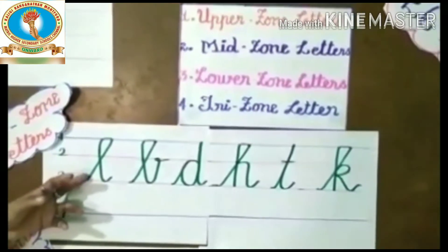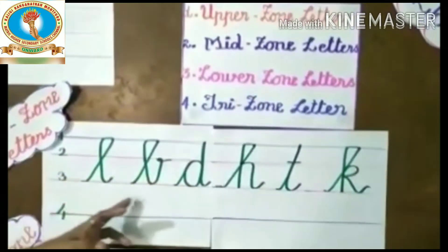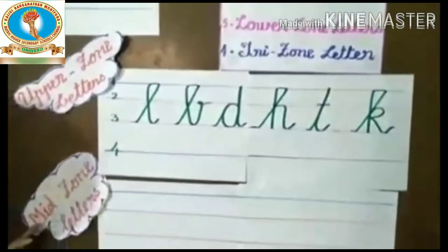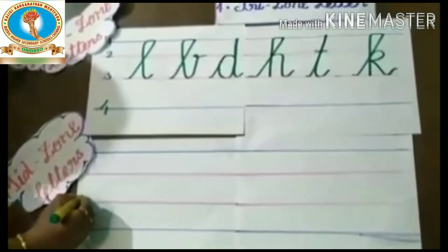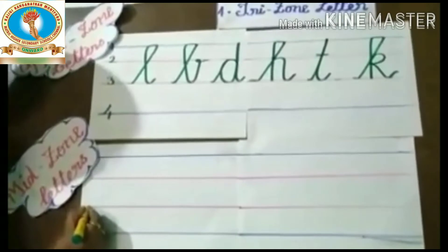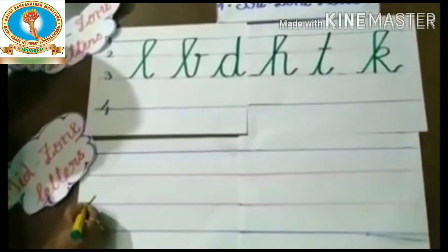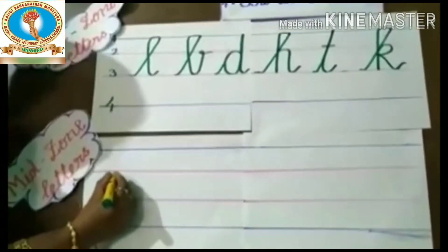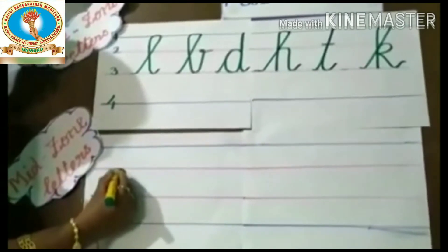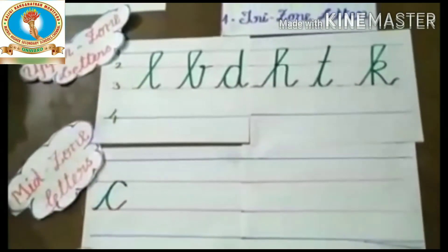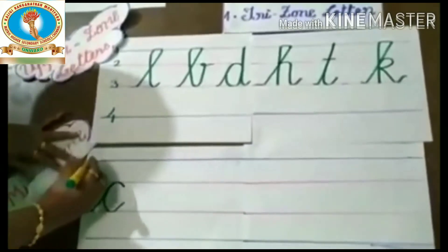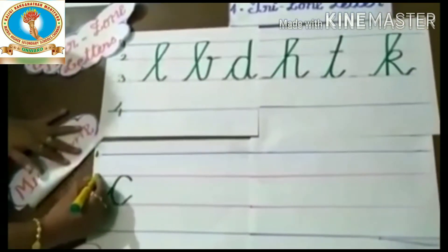We have completed the first zone. Let us see the second zone — the mid zone. Ready. First letter is C. Put the small curve to the second line, and come down to the third line. This is the first line, second line, third line, and the fourth line. C is over.